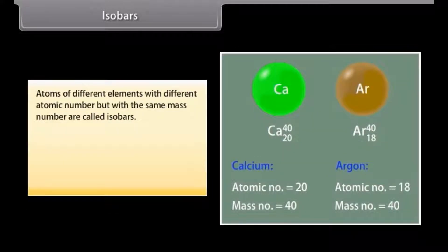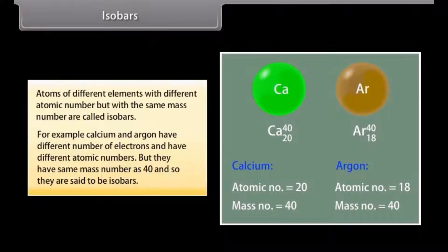Isobars. Atoms of different elements with different atomic number but with the same mass number are called isobars. Calcium and argon have different number of electrons, and have different atomic numbers. But they have same mass number as 40 and so they are said to be isobars.